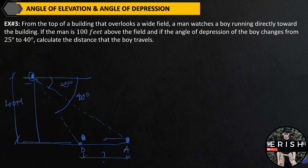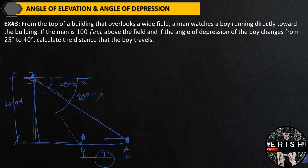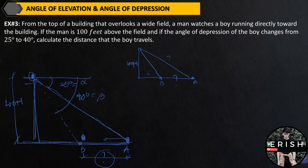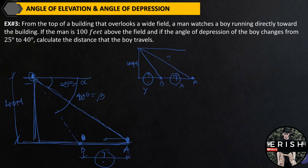Labeling the two angles of depression — say this is angle alpha and this is angle beta. To solve for this part, we have to consider the whole right triangle. The main right triangle we consider has the 100 feet height. Let's call the unknown distances X and Y. Solving for Y first, we will use the smaller triangle. Since we know the angle of depression of 40 degrees.